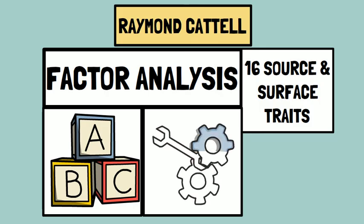Besides these, there are also a number of surface traits that result from the interaction of source traits. Cattell described the source traits in terms of opposing tendencies. He claimed that these factors represented the building blocks of personality and that they could be used to describe a person's behavior across various situations and circumstances.